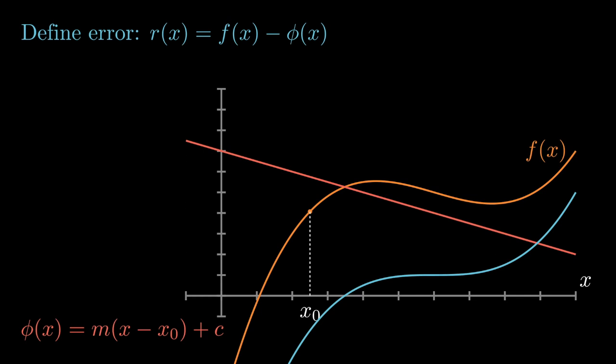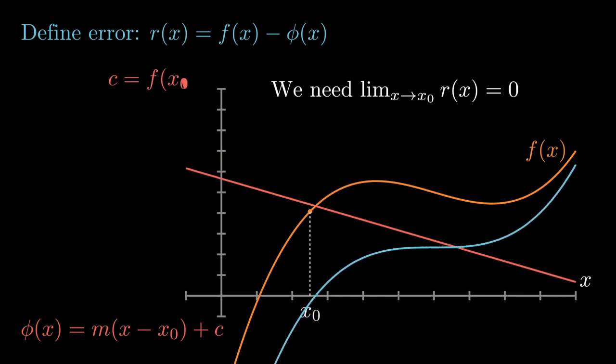Let's write error as a function r of x and it's the difference between the target function f of x and our affine approximation. Now our basic criterion for talking about a good approximation around x0 is that as x approaches x0, that error function r needs to go to zero.